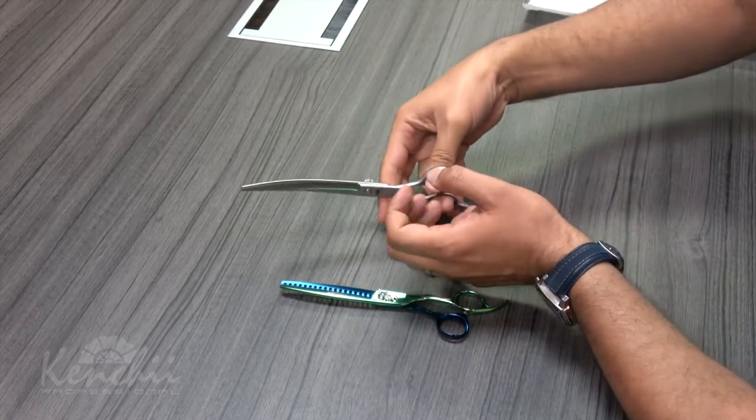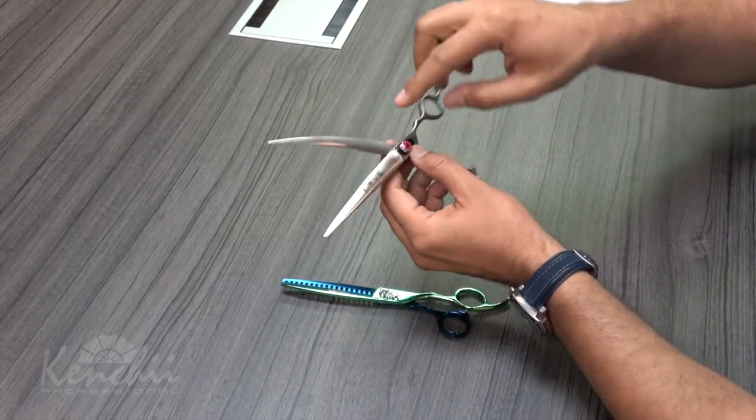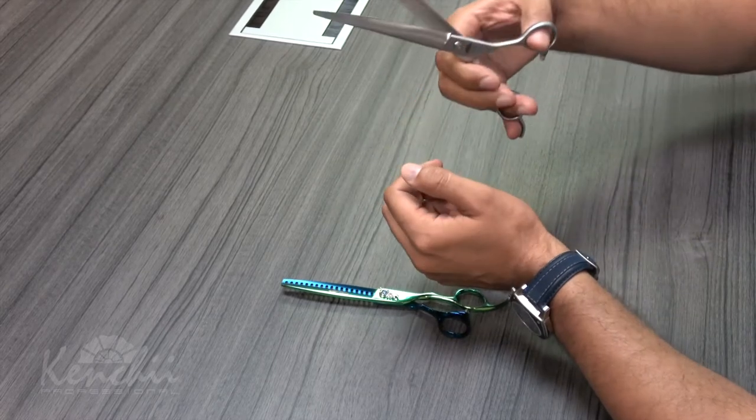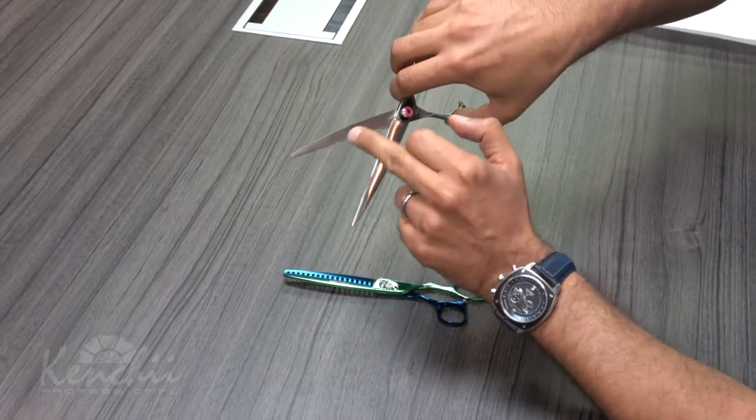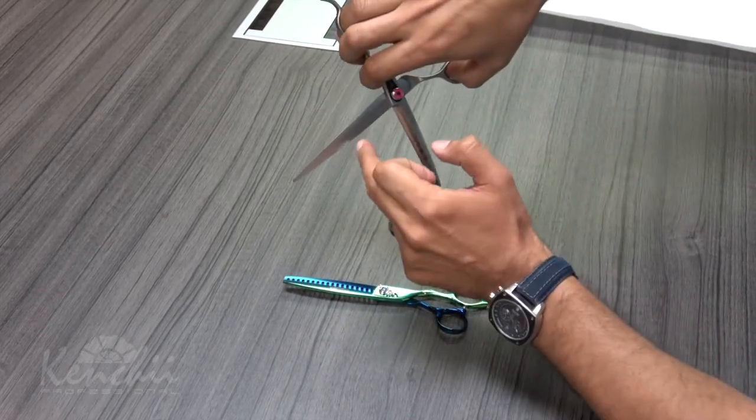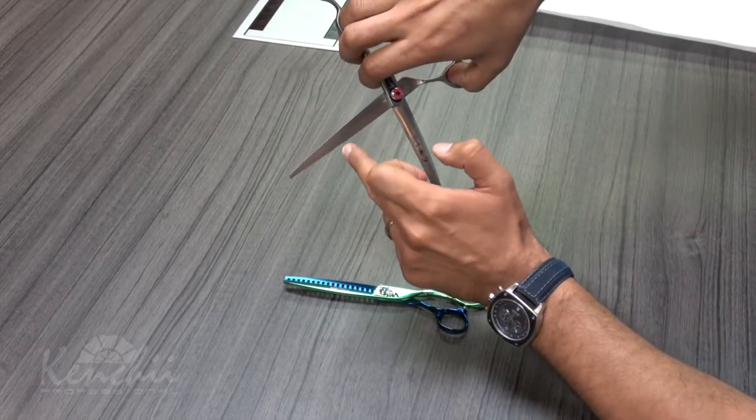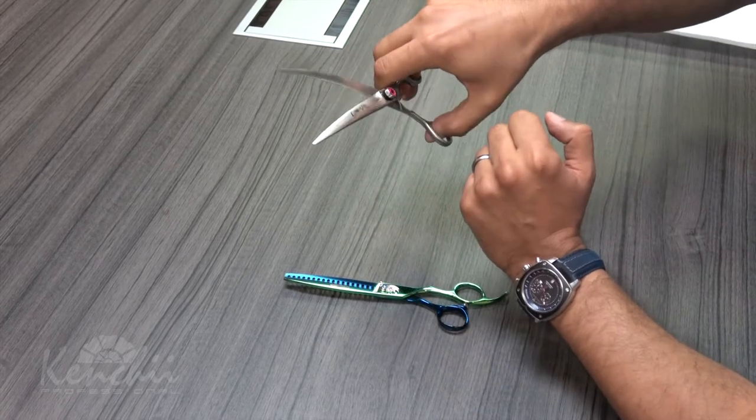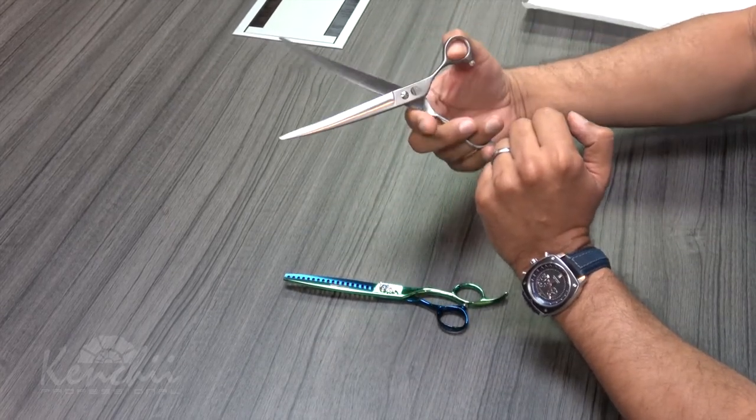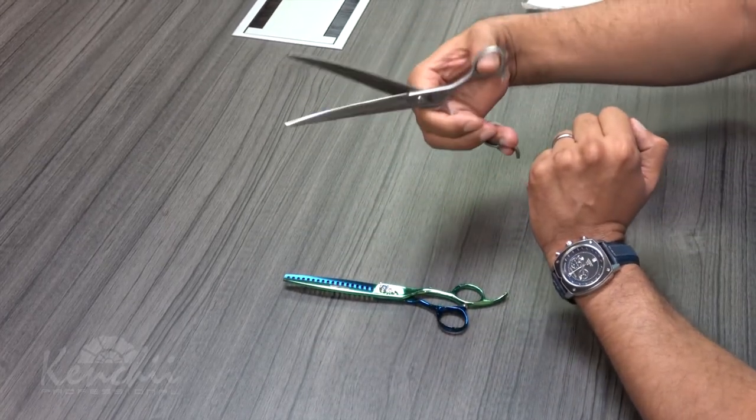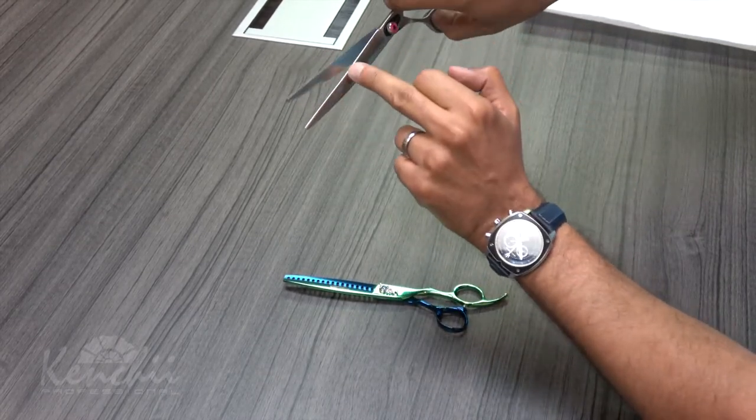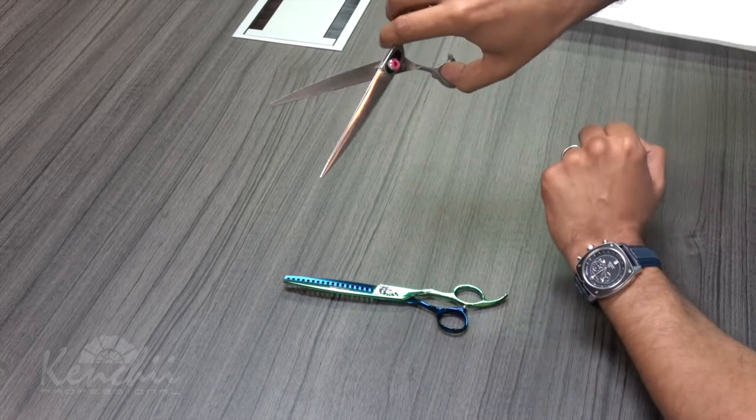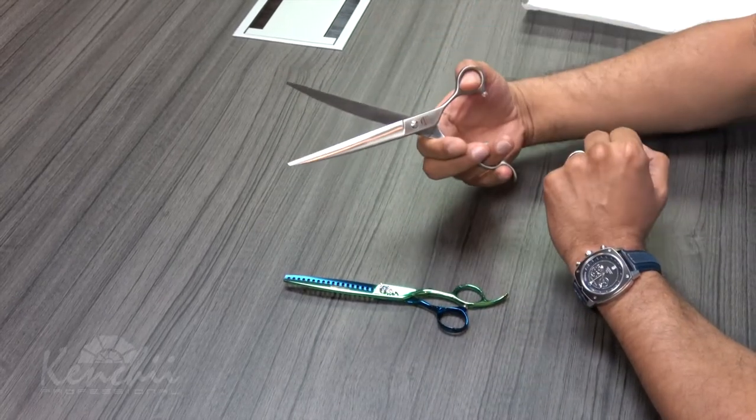So what happens is if you do that and there is a nick in the blade, you're now creating a nick on both sides because there might be a little burr once you dropped them. And if there's a nick that was caused by the drop, now you have actually made the problem worse by opening and closing right away because you're now hitting the nick from one side to another, therefore creating nick on both sides of the blade.